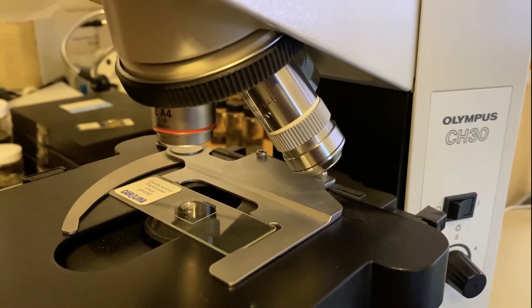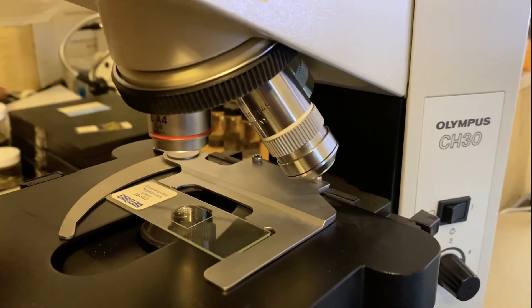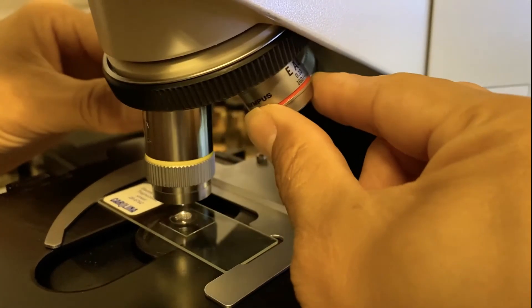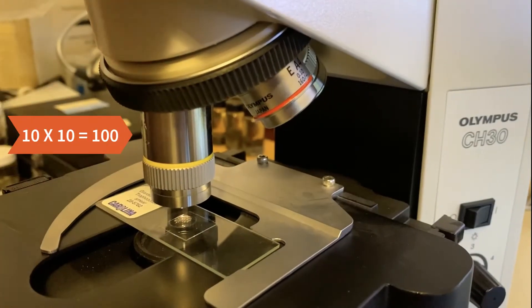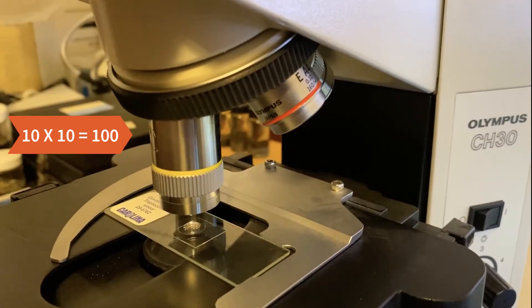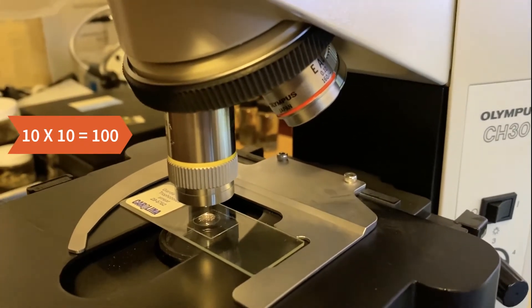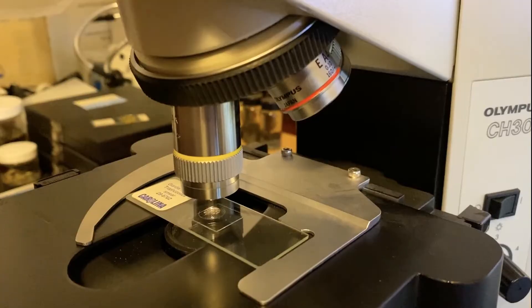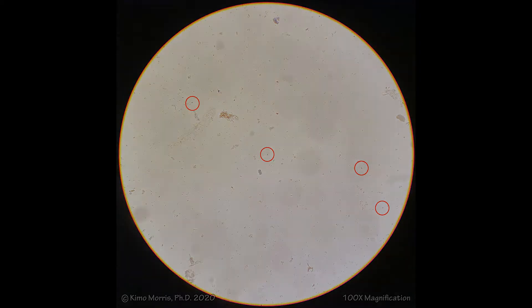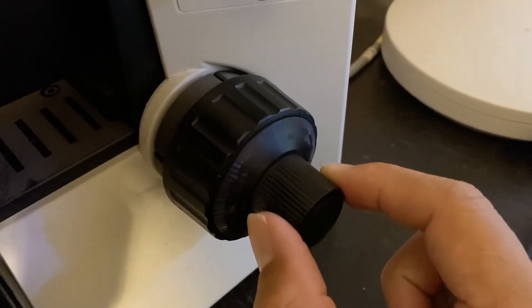At that point, you can then switch to the 10 times objective. Again, 10 times the eyepiece is also 10 times, so these make 100 times magnification. At this point, if you're very good, you'll be able to spot the teardrop-shaped Giardia. Most of you won't be able to do that though.